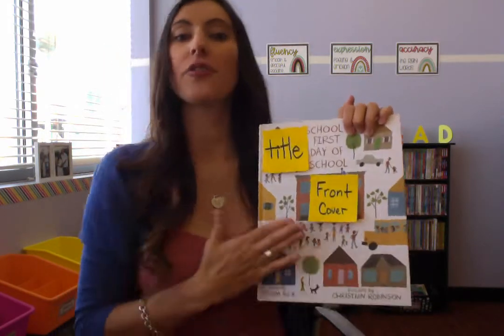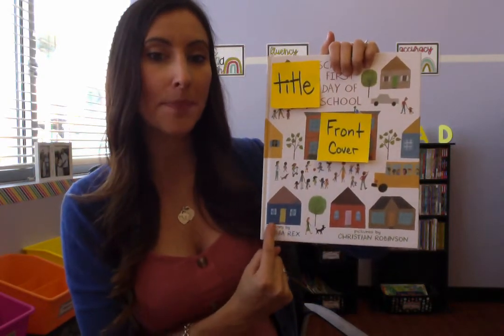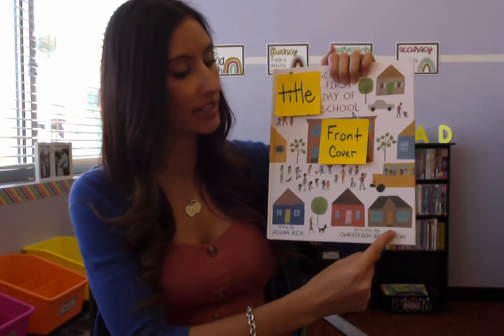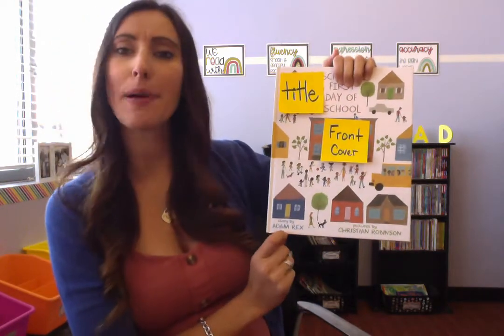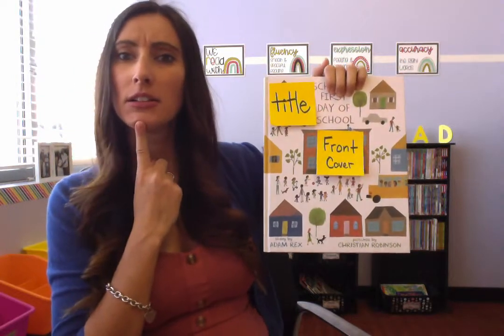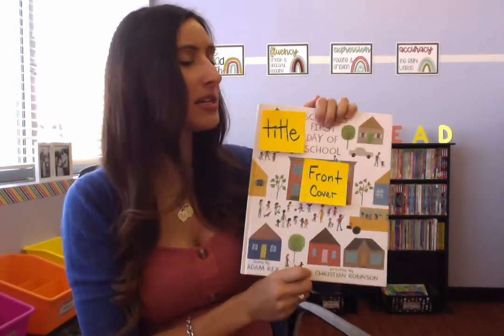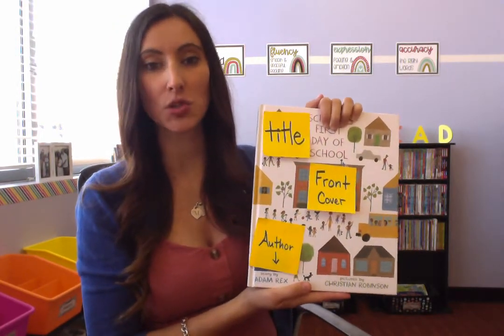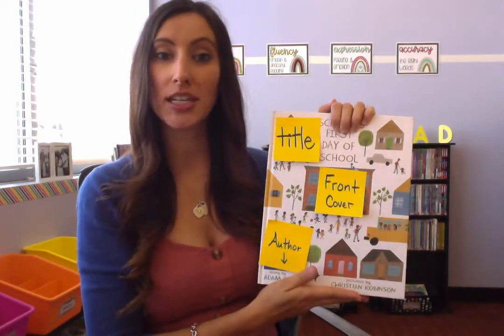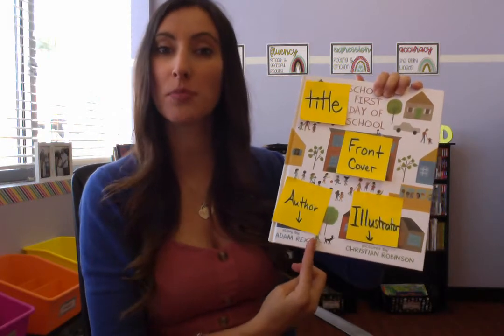So we have the title, the front cover, and the back cover — that means there are two more things we haven't identified yet. I see some names on the book: 'Pictures by Christian Robinson' and 'Story by Adam Rex.' Two different people! Adam Rex wrote the story and Christian Robinson drew the pictures. The person who wrote the story is the author, and the person who drew or painted the pictures is the illustrator.